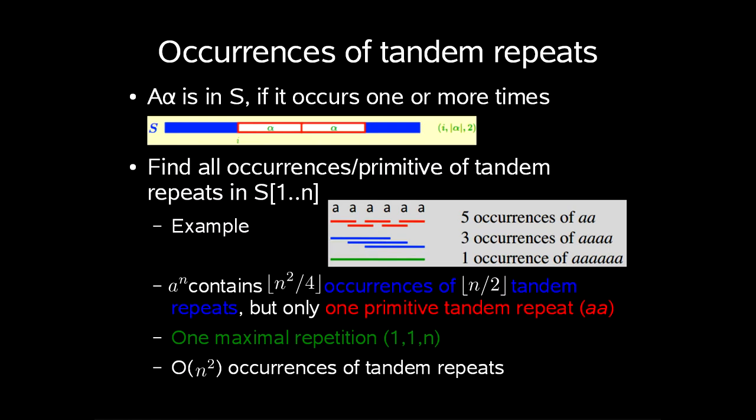In general, we can say the string a to the power of n contains n squared divided by four occurrences of n/2 tandem repeat. But there will only be one primitive tandem repeat, aa, equivalently one maximal repetition (1,1,n), which we also call a primitive tandem array.